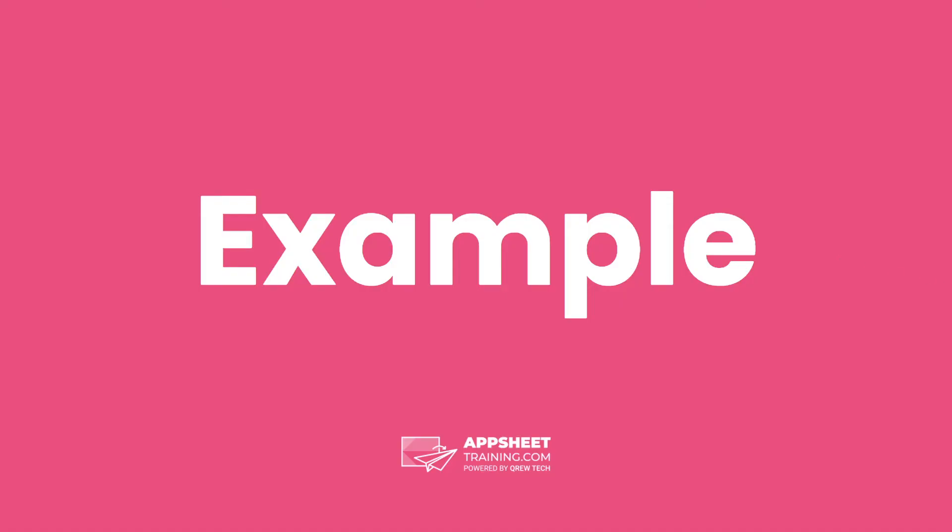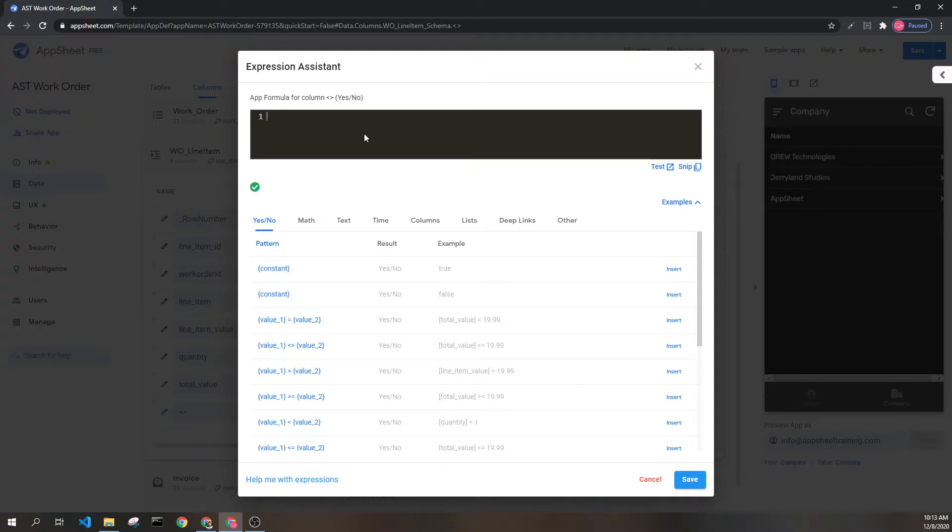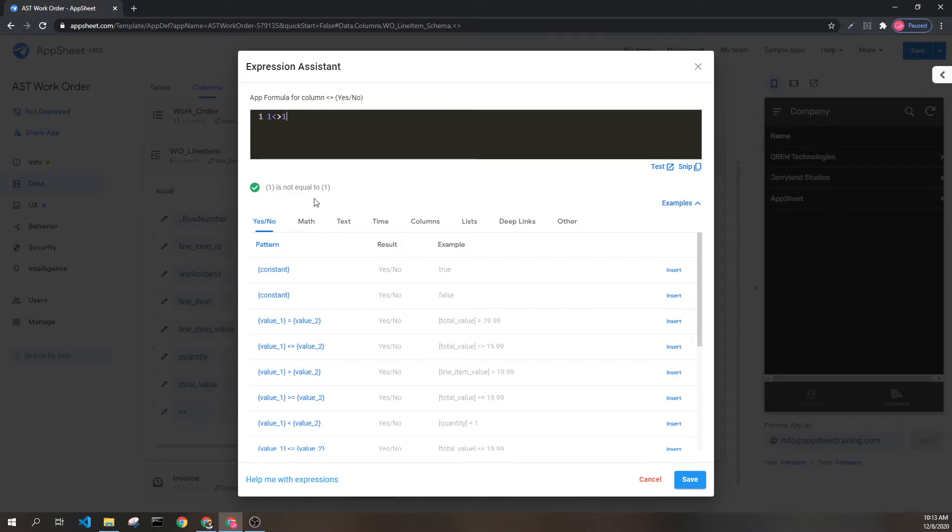Let's look at some examples. Here we can see that we can compare numbers. And this here would return false, where this would return true.